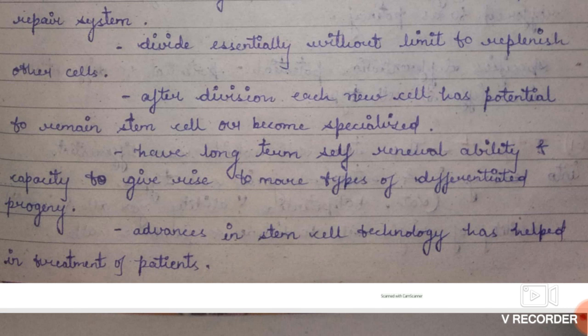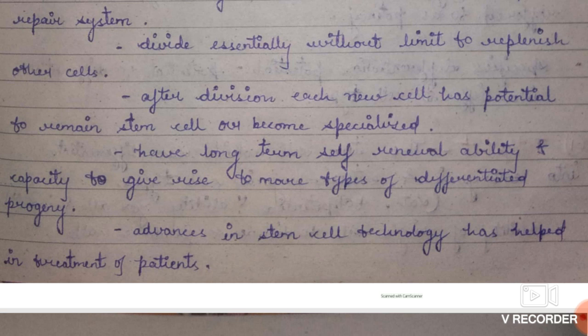A stem cell can give rise to daughter cells, which can in turn give rise to other stem cells or form specialized cells. Stem cells have a renewable ability and capacity to repair themselves and give rise to differentiated cells. Advances in technology have helped treat various patients, especially cancer patients, using stem cells.